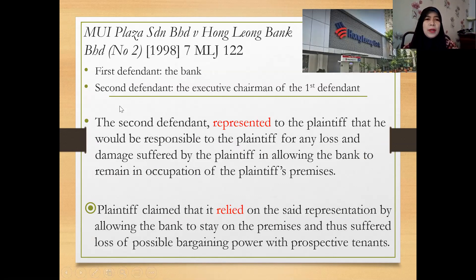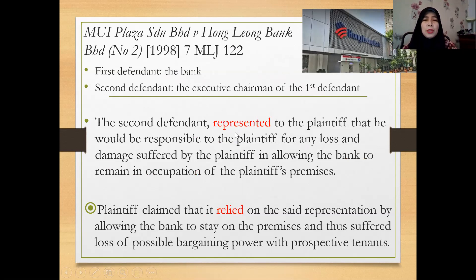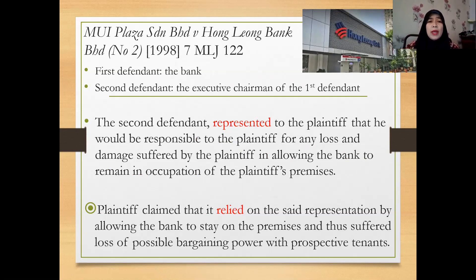There are a few defendants — at least two. The first defendant was the bank, obviously Hong Leong Bank. The second defendant was the executive chairman of the first defendant — not normal staff, but executive chairman. The second defendant represented to the plaintiff, Mui Plaza, that he would be responsible for any loss and damage suffered by the plaintiff in allowing the bank to remain in occupation of the plaintiff's premises. It involves a certain tenancy on the part of Mui Plaza, and Hong Leong Bank wanted to stay on the premises — hence the issue of misrepresentation arises.